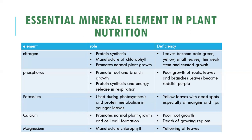Last but not least, magnesium. The role of magnesium in plant nutrition is that it enables the manufacture of chlorophyll. The deficiency of magnesium can be seen as yellowing of the leaves.